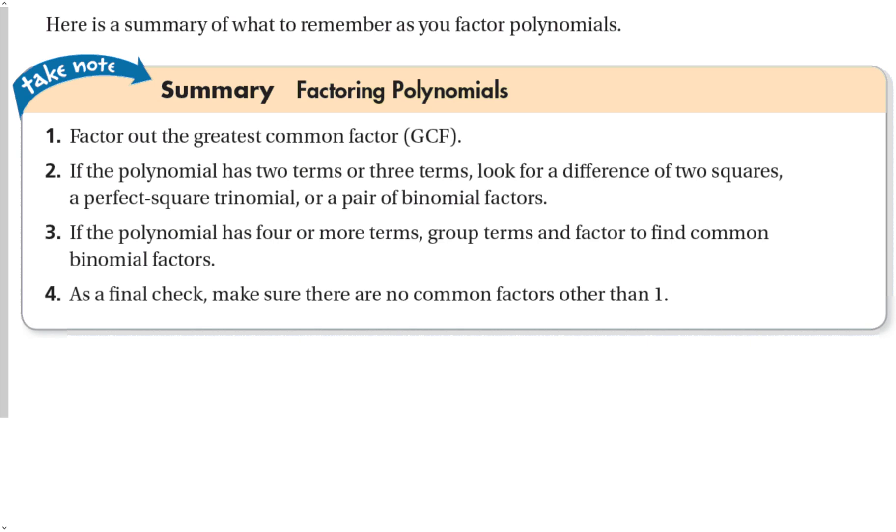If the polynomial has two or three terms, look for differences of two squares, perfect square trinomials, or a pair of binomial factors if we have to do the factoring technique like we just did.